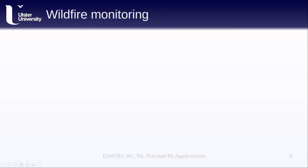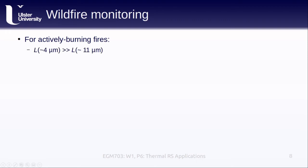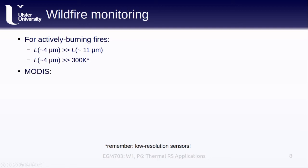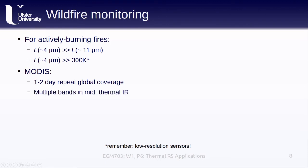Another big application of thermal remote sensing is monitoring and studying wildfires. For an actively burning wildfire, the radiance at approximately 4 micrometers is much higher than the radiance at approximately 11 micrometers. From Wien's displacement law, the wavelength of peak radiance is inversely related to temperature. MODIS, the Moderate Resolution Imaging Spectrometer, acquires images every 1 to 2 days and has multiple bands in both the mid-infrared around 4 to 5 micrometers as well as the thermal infrared around 10 to 11 micrometers.